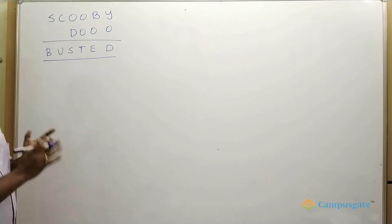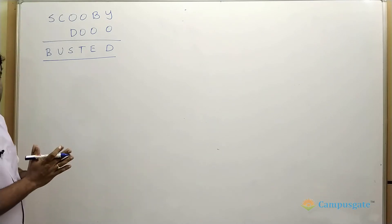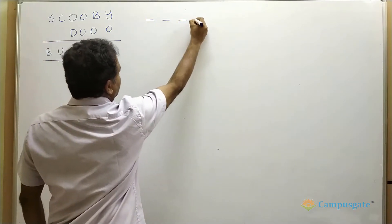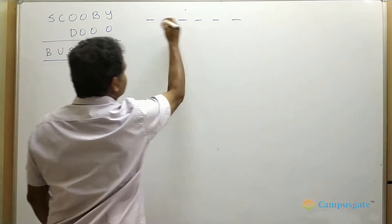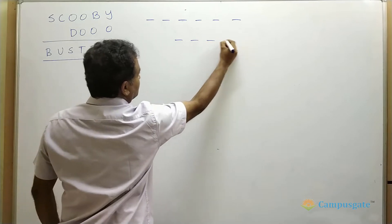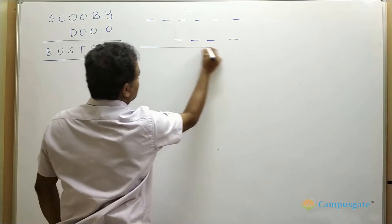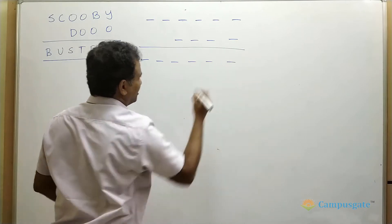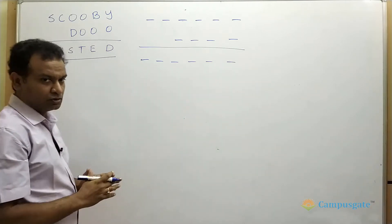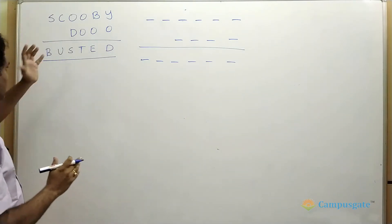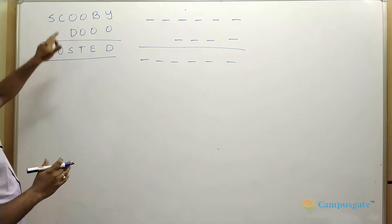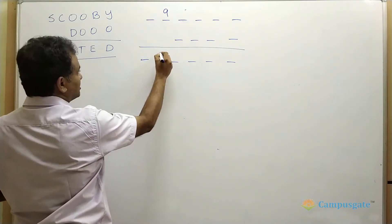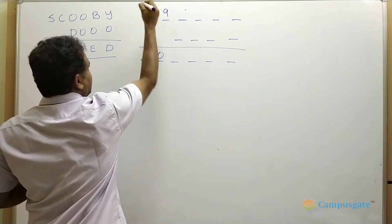So, S plus one equals B — that is the only possibility here. To solve this question, the standard approach is to put some blanks: a six-digit number plus a four-digit number gives a six-digit number. From our observation, C must take nine, U must take zero, and there must be a carry here.